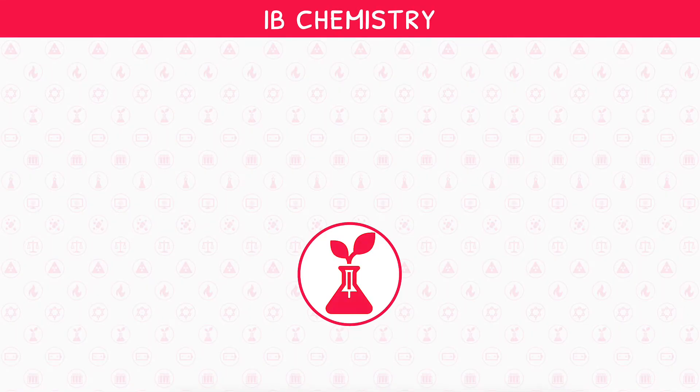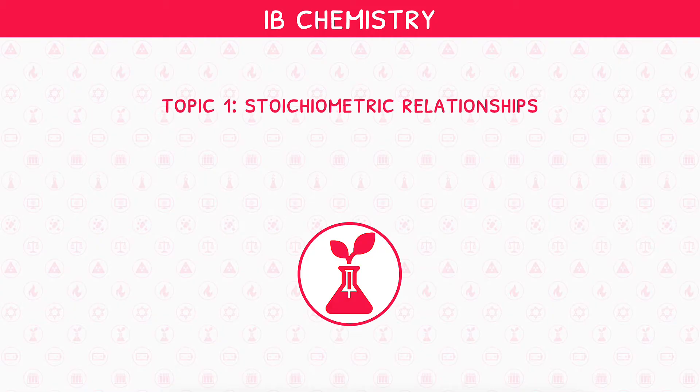Welcome back to our IB Chemistry video series. This is the first video in IB Chemistry Topic 1, Stoichiometric Relationships, where we will be looking at the types of matter, phases of matter, and concept of ideal gases.